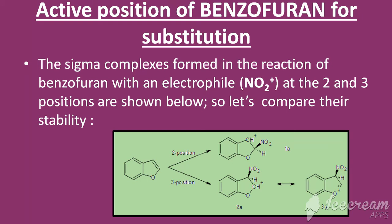For attack at position 3, that is the beta position, the two resonating structures which are 2a and 3a will have to contribute for the stability of the product. But since the lone pair of electrons at oxygen makes it highly electronegative, hence the structure obtained by beta substitution is less stable as compared to alpha substitution.